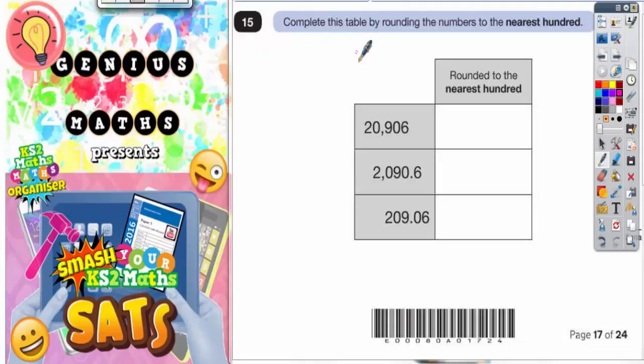Question 15: Complete this table by rounding the numbers to the nearest hundred. Now let's take a look first at the numbers and which digit is in the hundredth column. So this number says twenty thousand nine hundred and six, so the nine is in the hundredth column.